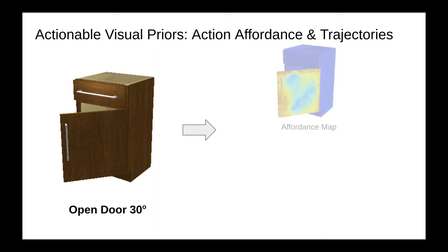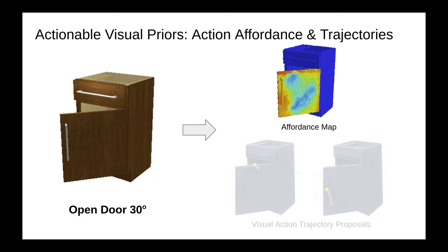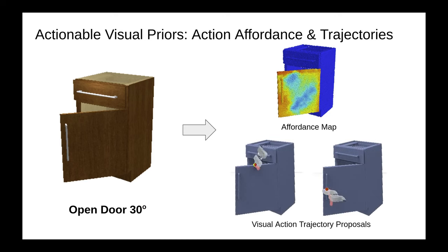First, we output an affordance map indicating where to interact to accomplish the task. Then, for every actionable position, we propose several visual action trajectories suggesting how to interact.